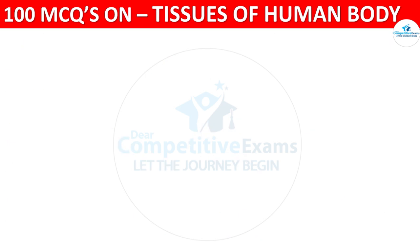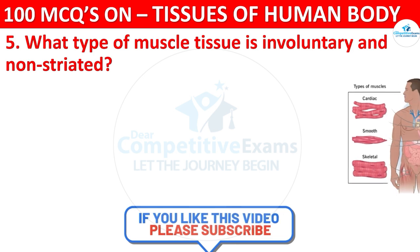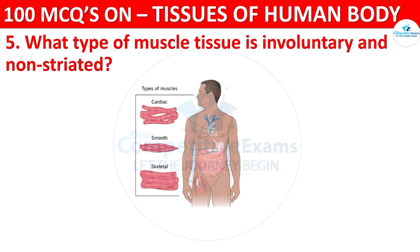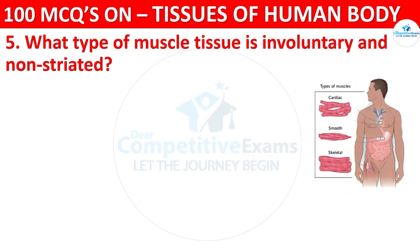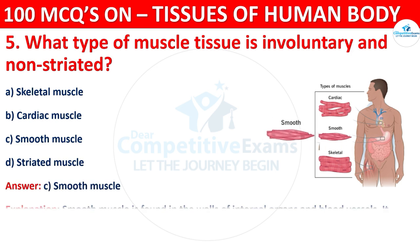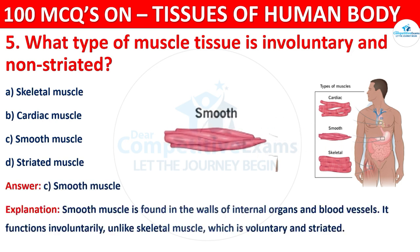Question number five: what type of muscle tissue is involuntary and non-striated? Your options are skeletal muscle, cardiac muscle, smooth muscle, or striated muscle. The correct answer is C, that is smooth muscle. Smooth muscle is found in the walls of internal organs and blood vessels. It functions involuntarily, unlike skeletal muscle which is voluntary and striated.